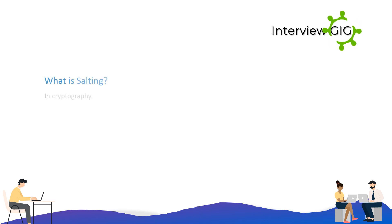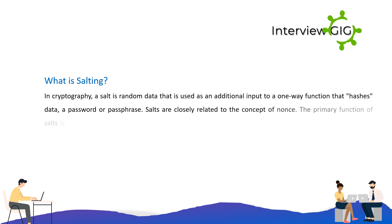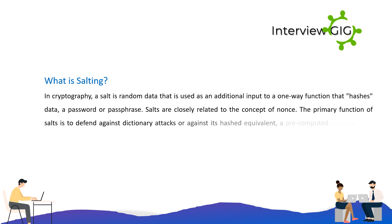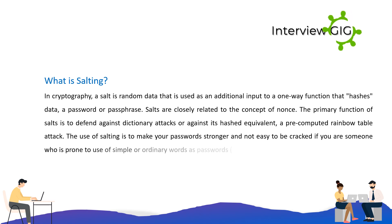What is salting? In cryptography, a salt is random data that is used as an additional input to a one-way function that hashes data, a password or passphrase. Salts are closely related to the concept of nonces. The primary function of salts is to defend against dictionary attacks or against their hashed equivalent, a pre-computed rainbow table attack. The use of salting is to make your passwords stronger and not easy to be cracked, especially if you are prone to using simple or ordinary words as passwords.